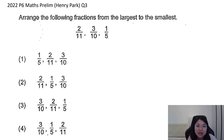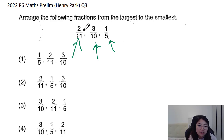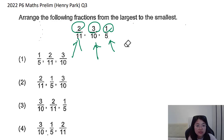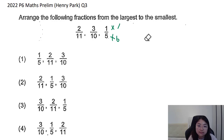Instead, we are going to compare the denominators. This question asks us to arrange fractions from largest to smallest. The denominators are pretty big while the numerators are small, so it's easier to make the numerators the same value. The smallest common multiple of two, three, and one is six, so for the first fraction we multiply to get six over thirty.